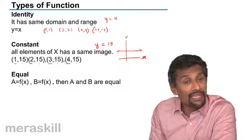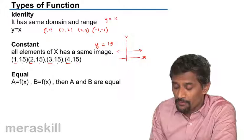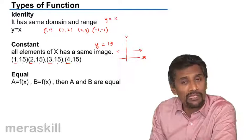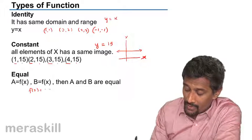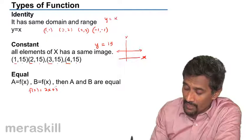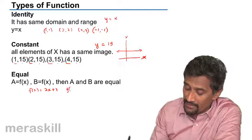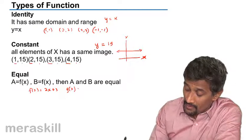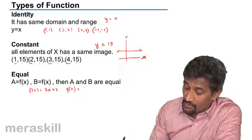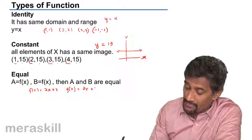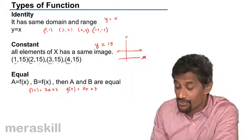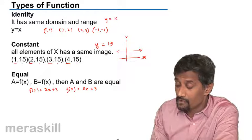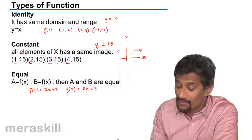Similarly, we have equal functions. If two functions are one and the same — suppose F(x) = 2x + 3 and G(x) = 2x + 3 — then F(x) = G(x) and both functions are equal.